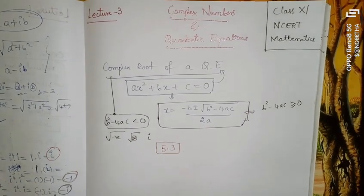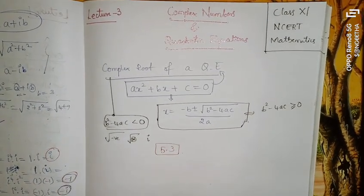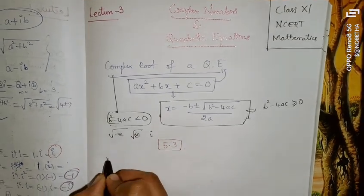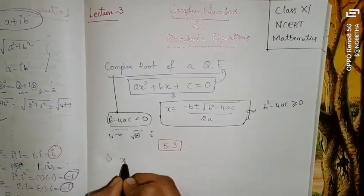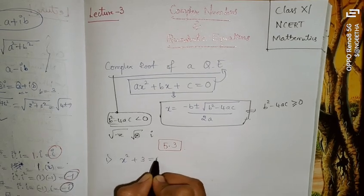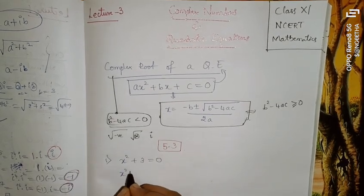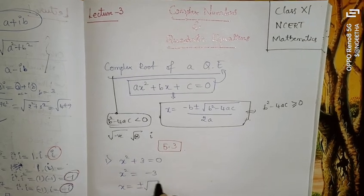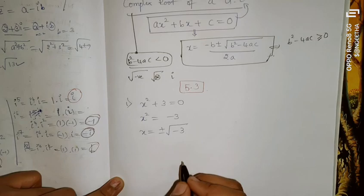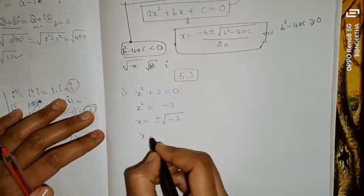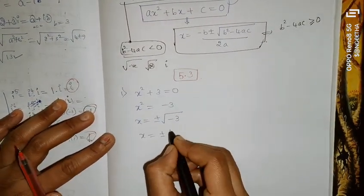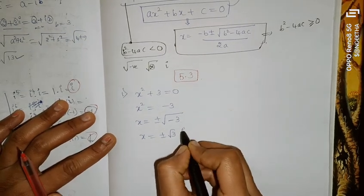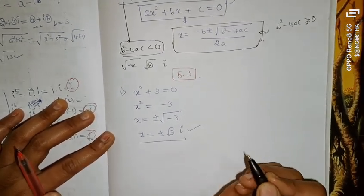Exercise 5.3 — these equations are very easy. First question: x² + 3 = 0. So x² = −3, which gives x = ±√(−3) = ±√3 · √(−1) = ±√3·i. That's your answer.